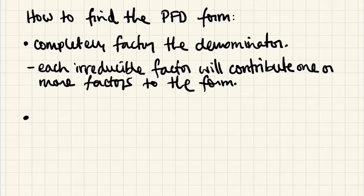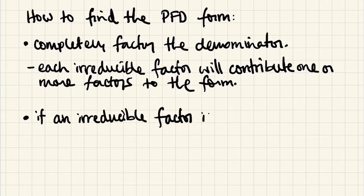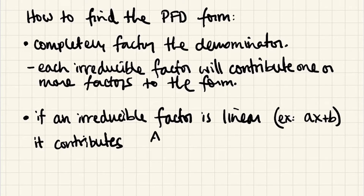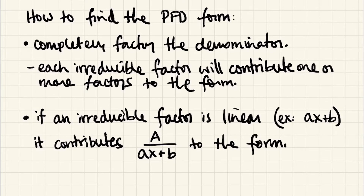If an irreducible factor is linear — for example, Ax plus B — this is the simplest case. It contributes just a single capital letter divided by that factor. In the last example, both factors were irreducibly linear, so we had A over one factor plus B over the other.